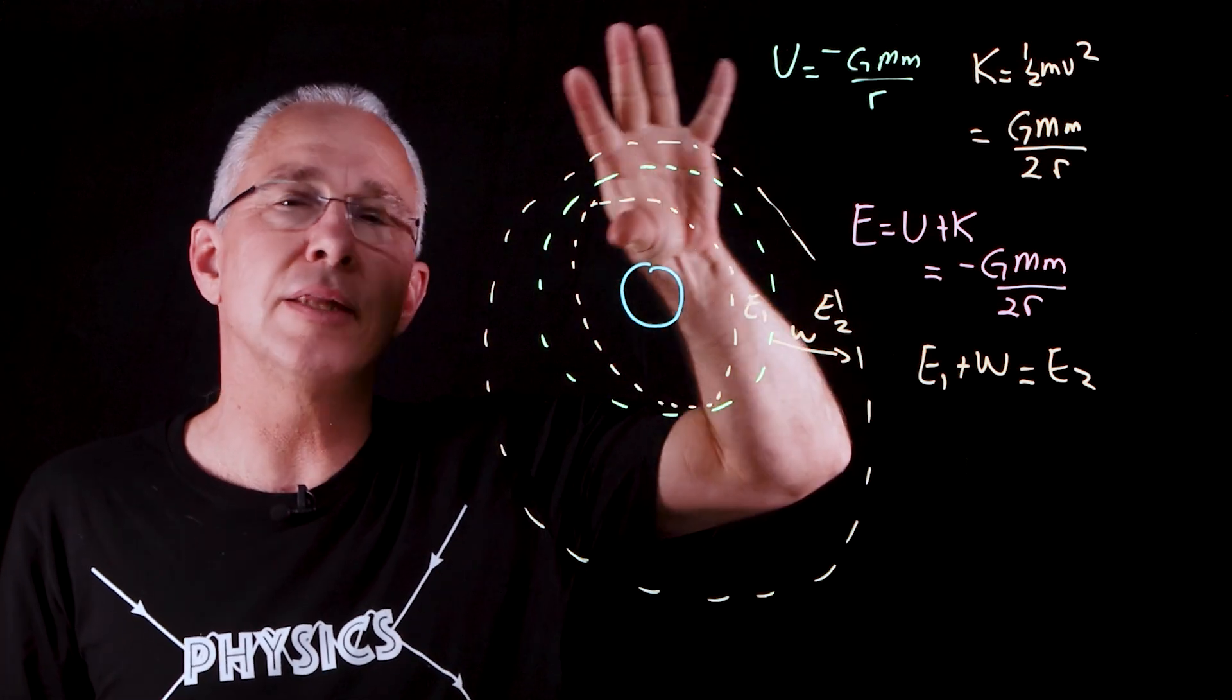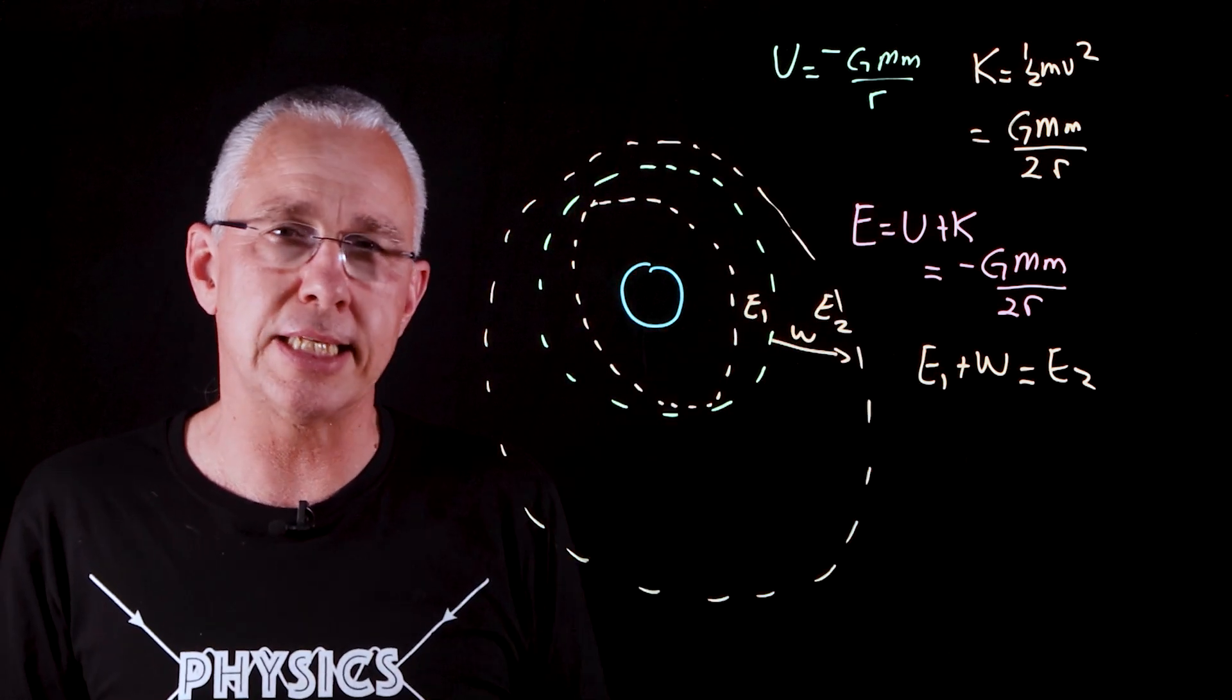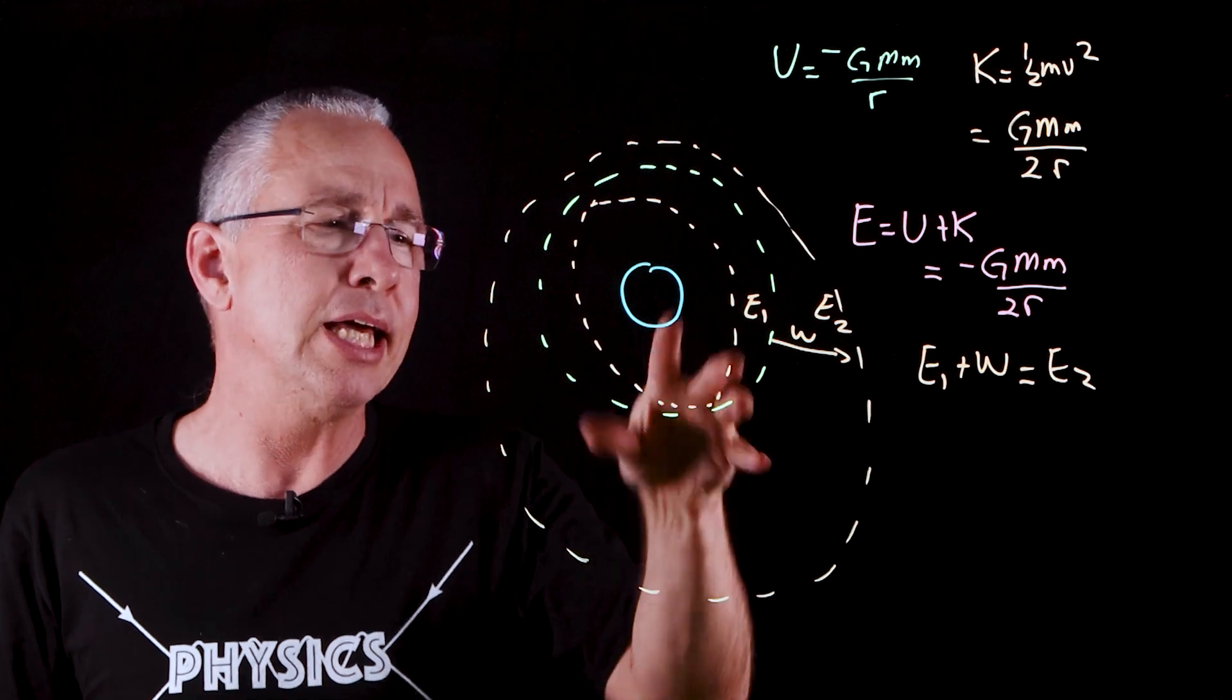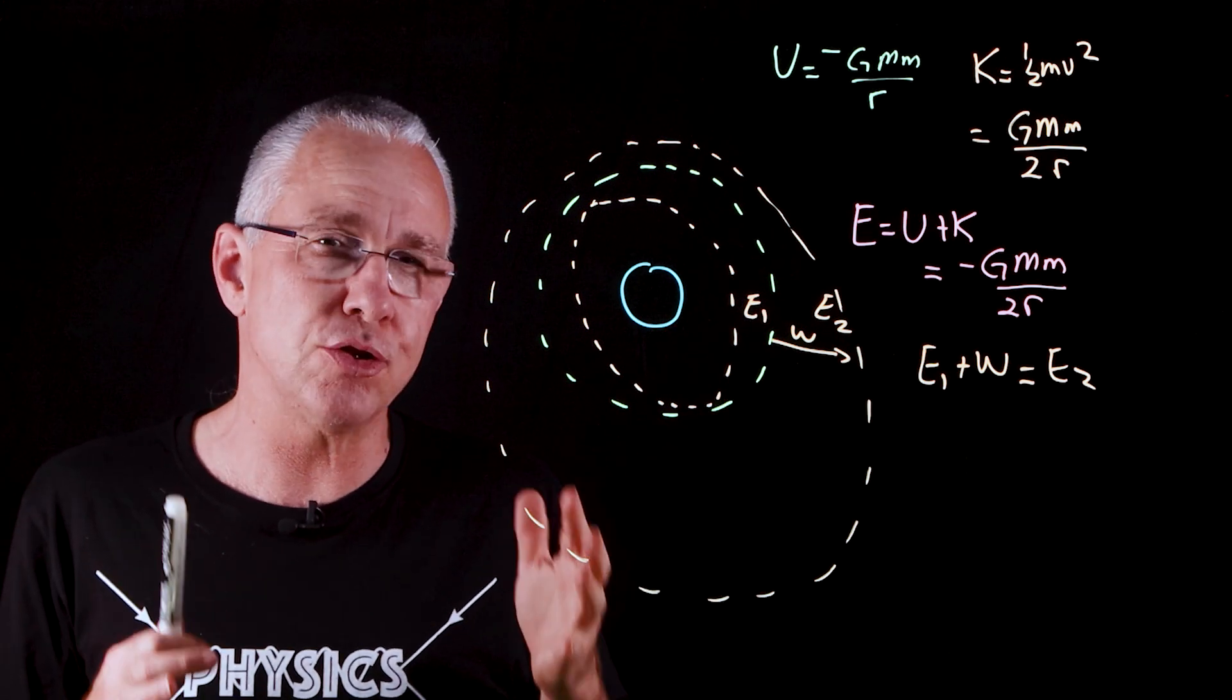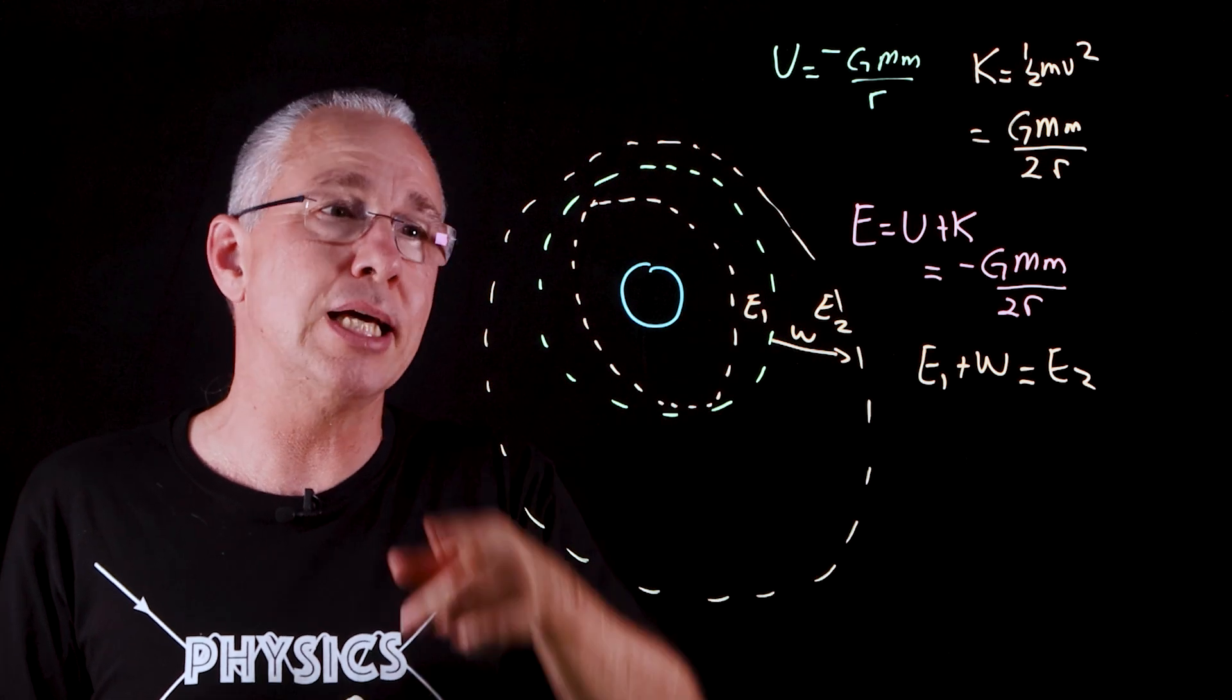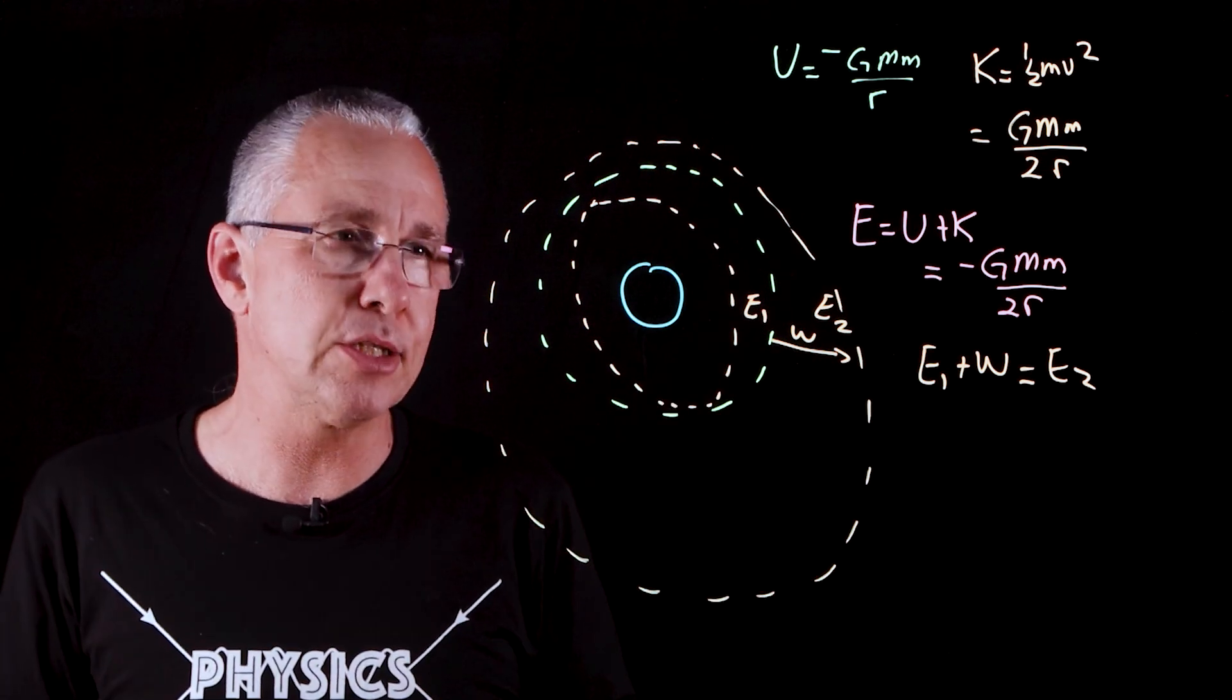One last point though. What about the total energy of, let's say, the satellite in an elliptical path? Isn't the radius increasing at certain points? Yes, that's true. But the total energy, as long as it stays in orbit, remains constant.